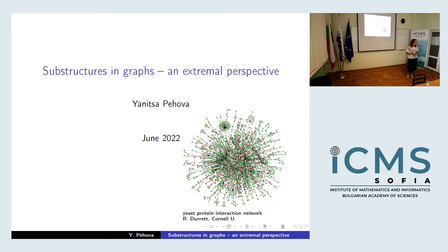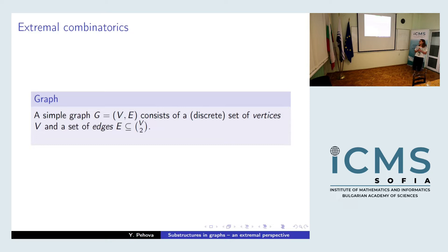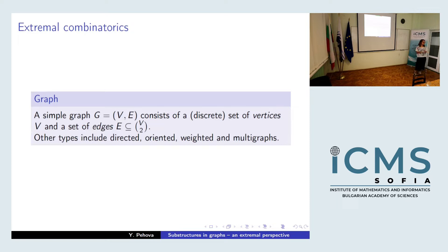There will be some proofs in the slides — I know it's a bit unconventional. We start with the definition of a graph, which hopefully everyone knows. A graph consists of a set of vertices and a set of edges, which are just unordered pairs of vertices. There are different kinds of graphs: directed, oriented, weighted, multigraphs. They all have to do with the space where the edge set lives — if edges are ordered, we draw arrows. This definition is the most common one: the simple graph.